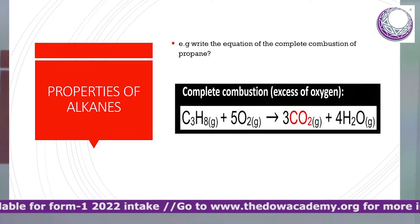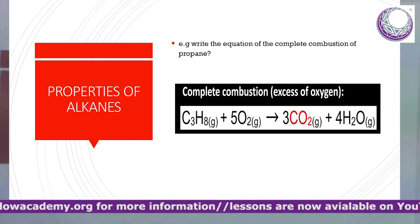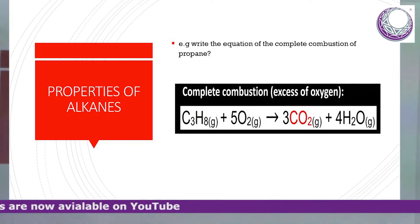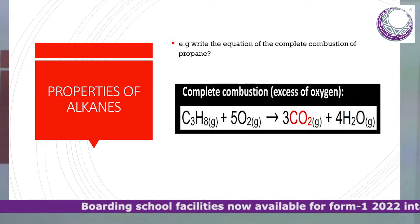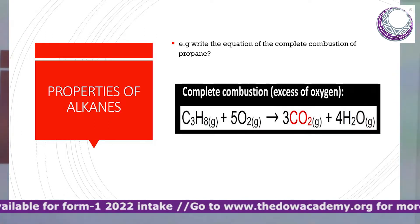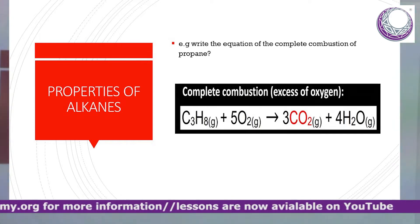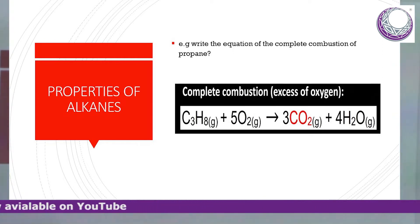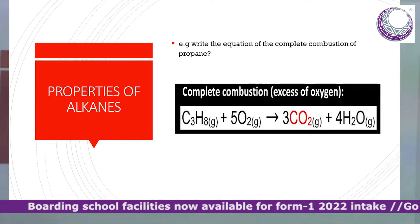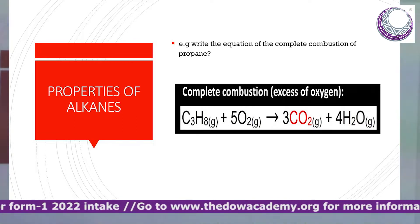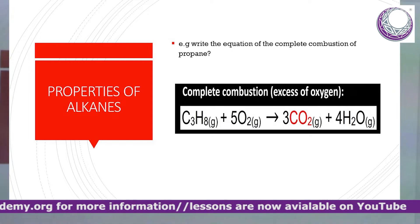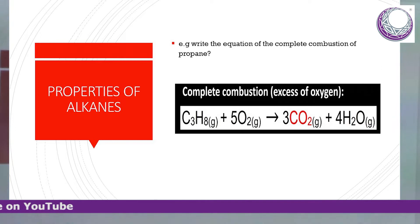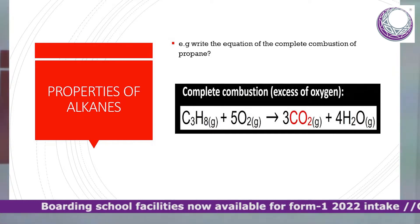For example: write the equation for the complete combustion of propane. Propane has three carbon atoms and eight hydrogen atoms. If it undergoes complete combustion, it gives rise to carbon dioxide and water. To balance: there are three carbon atoms, so we put a 3 in front of CO2. The hydrogen atoms — eight on the left and two in each water molecule — so we put 4 in front of H2O. That gives ten oxygen atoms on both sides, so we put 5 in front of O2.